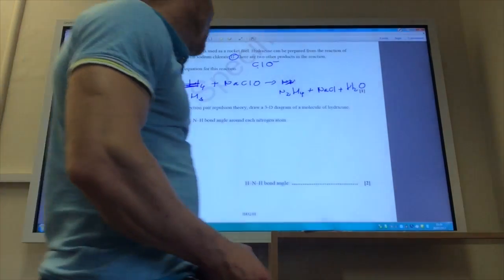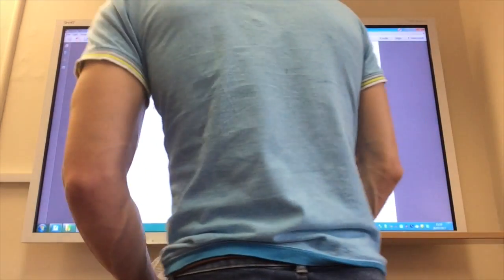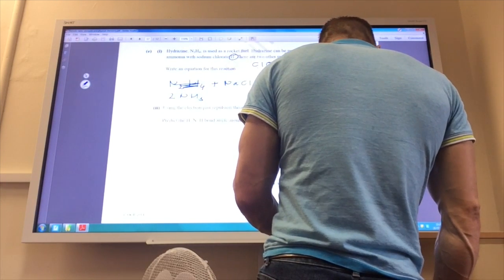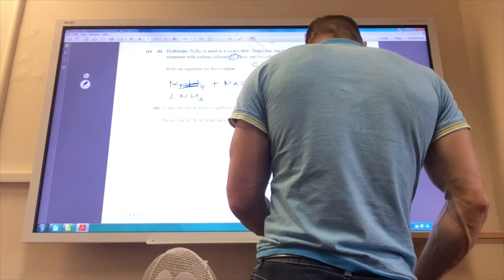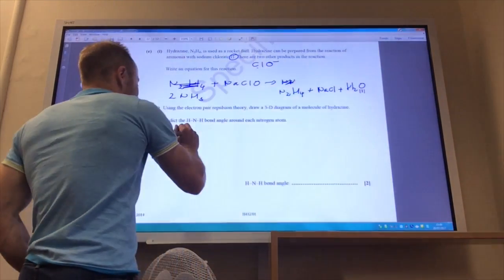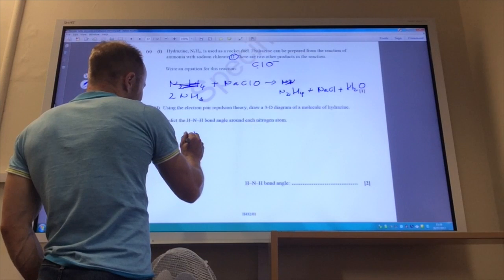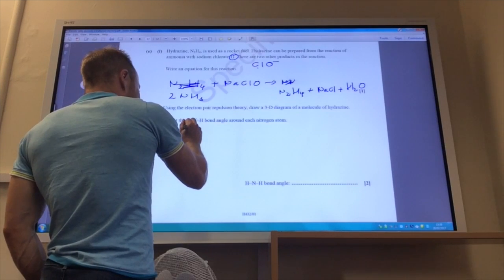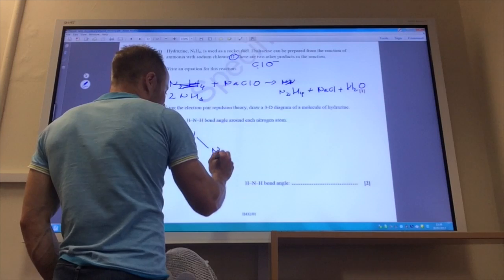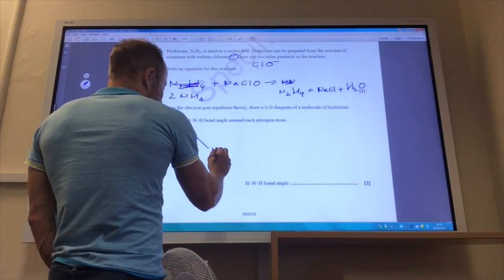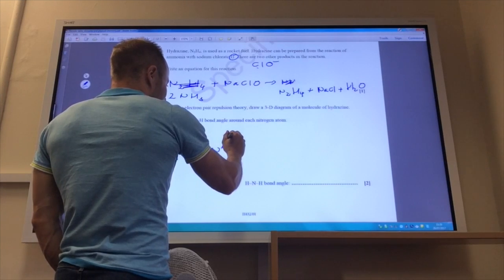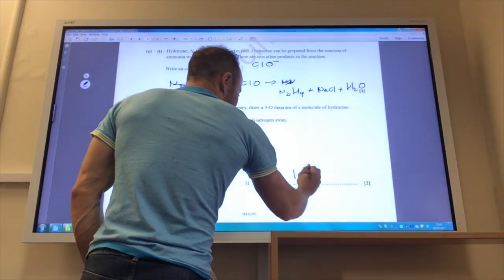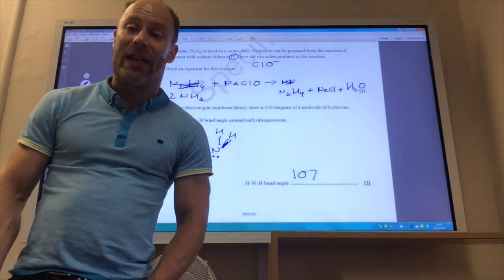Using the electron pair repulsion theory, draw a 3D diagram of a molecule of hydrazine. Predict the HNH bond angle around the nitrogen atom. Okay, so we've got an N there. We're just basically drawing ammonia with this. There's my lone pair, but then that will be my bond to the nitrogen there. Let's put my lone pair there, which means that this is going to go up an H like so. And the bond angle is of course 107 degrees, because I've got three bonding pairs and one lone pair.